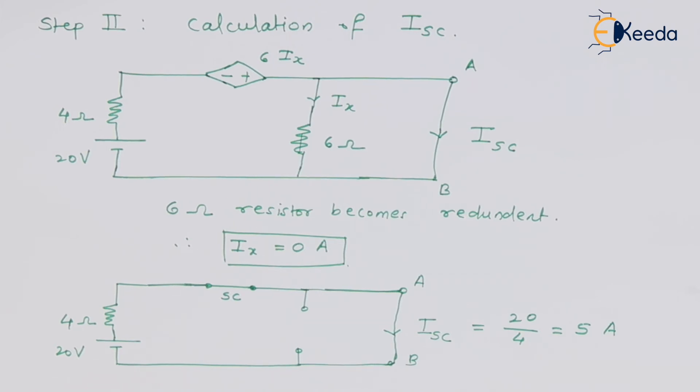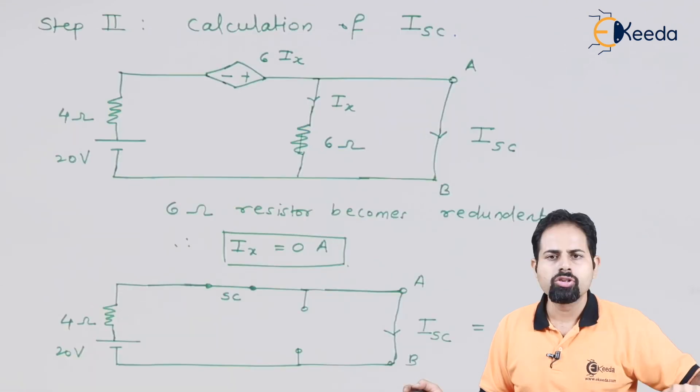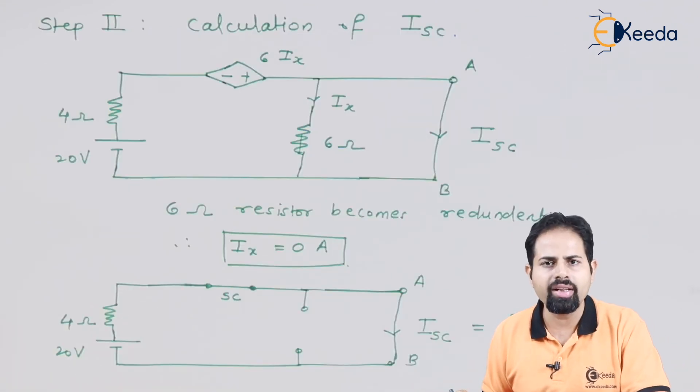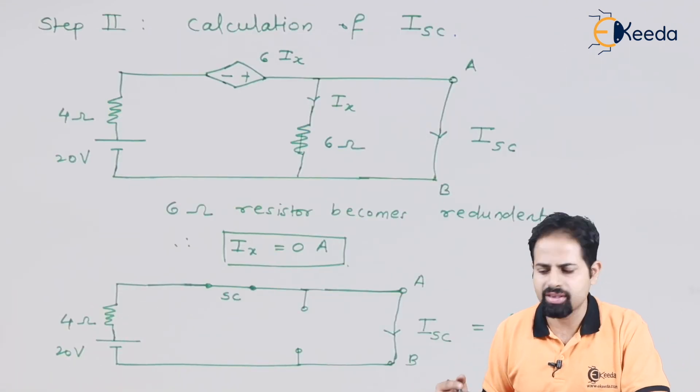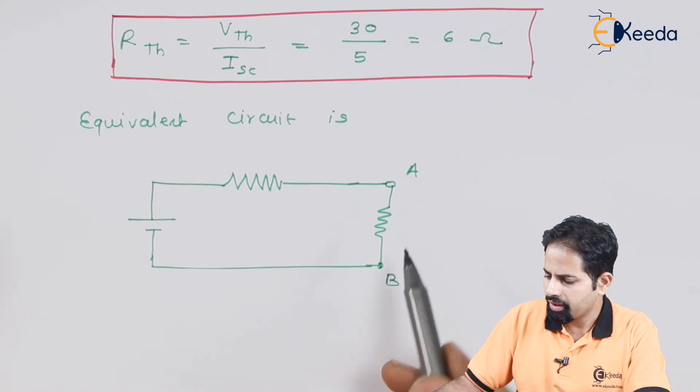So we have got Isc and we have also got Vth. Vth is 30 volts. So now what we will do, we will calculate Rth and we will draw the equivalent circuit. So here comes the equivalent circuit.